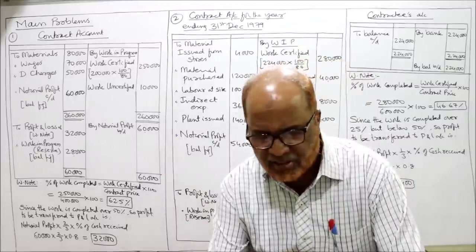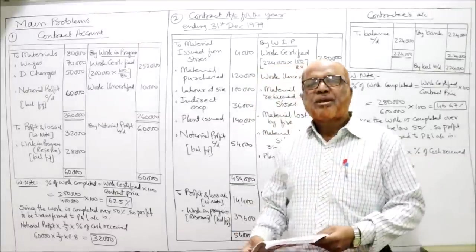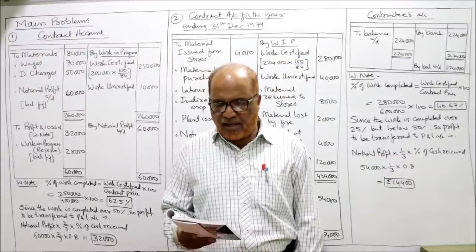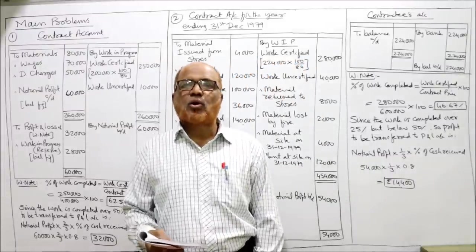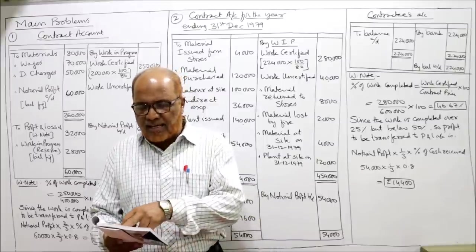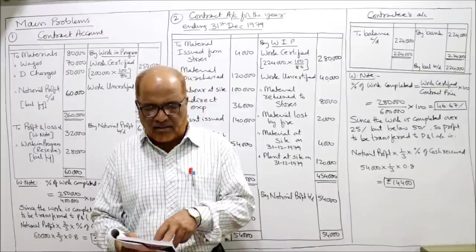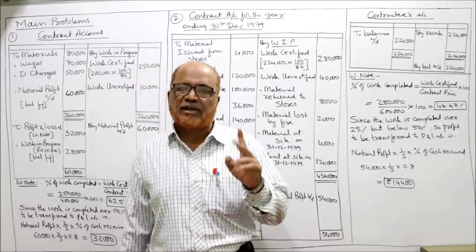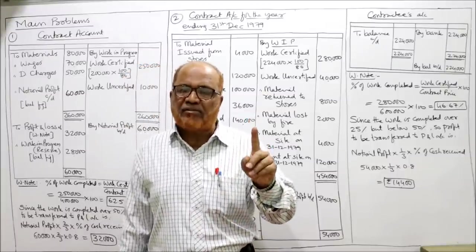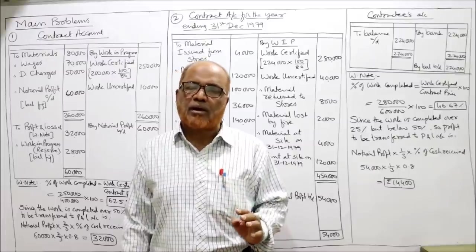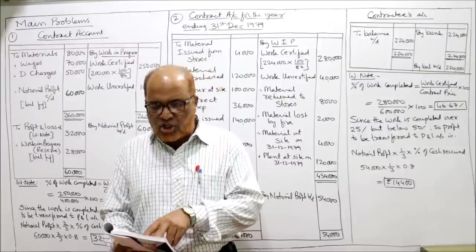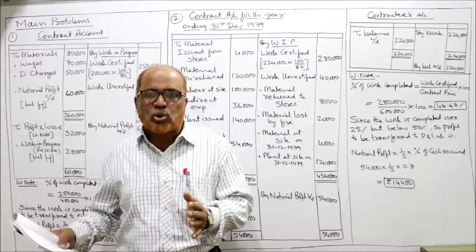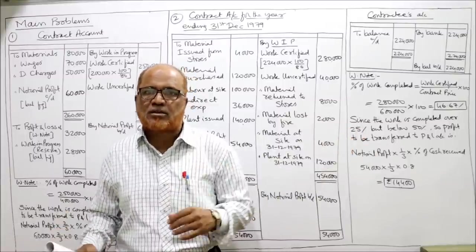Second problem: a building contractor undertook construction work at a contract price of 6 lakh, beginning on 1st January 1979. The following are the particulars up to 31st December 1979 — one year of work. Expenditures include: material issued from stores (the contractor has a godown and issues material to the site), and materials purchased directly from the market and sent to the site.